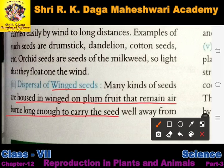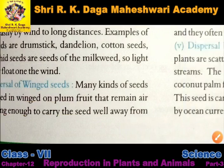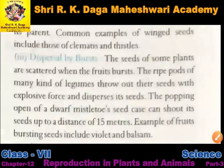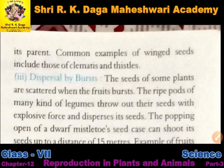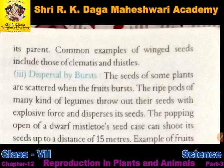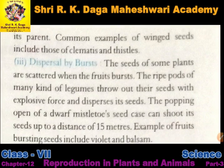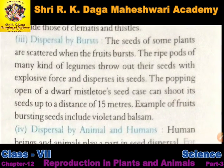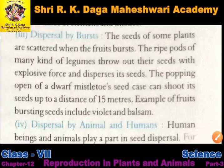Seeds like those of clematis and thistles can remain airborne for a long time because they have wing-like structures. Inke wing hone ka matlab yahan pe yah hai ki woh lambe samay tak air mein rah sakte hain, aur is tarike ke seeds ko hum winged seeds bhi bolte hain.